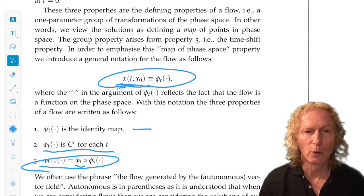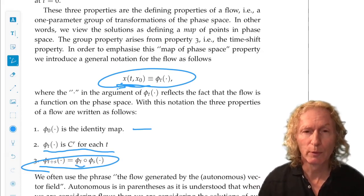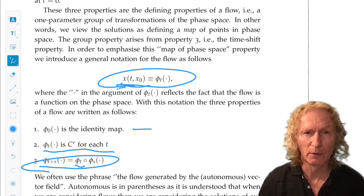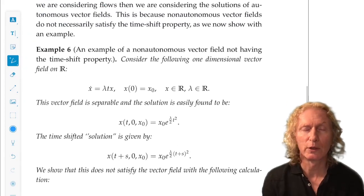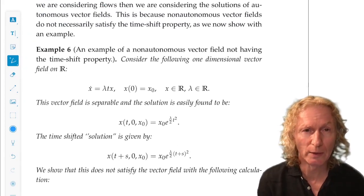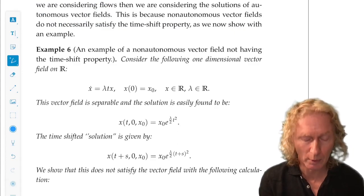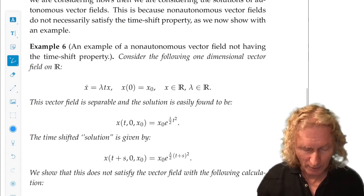The solutions of autonomous equations do not define a flow. They do not satisfy the time shift property. Look at an example. x dot equals lambda t x. We can solve this equation.